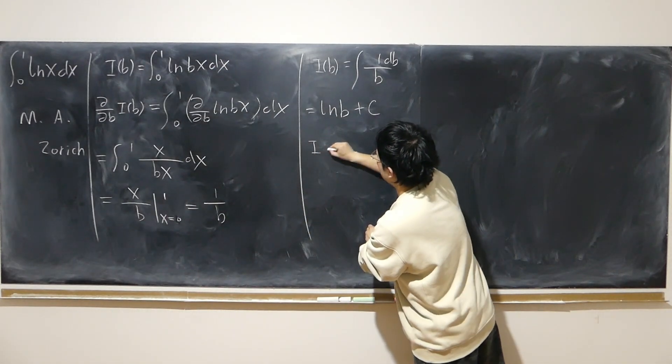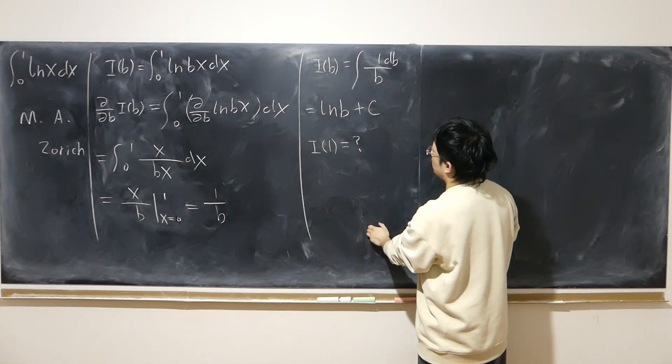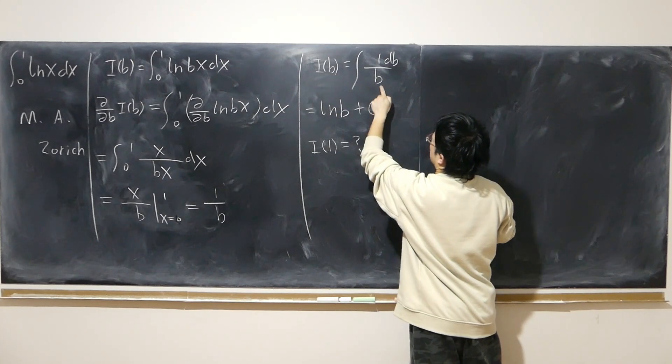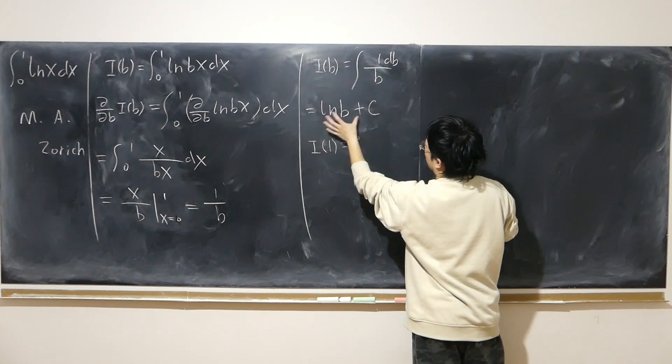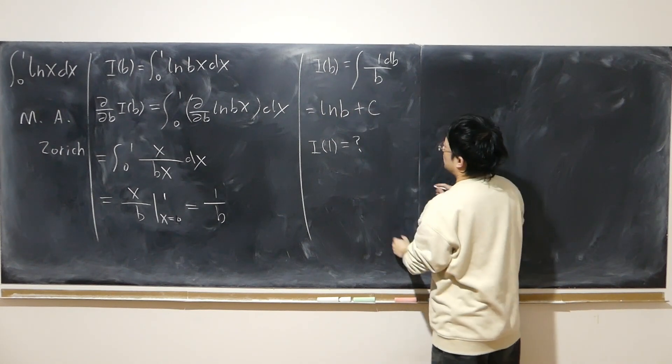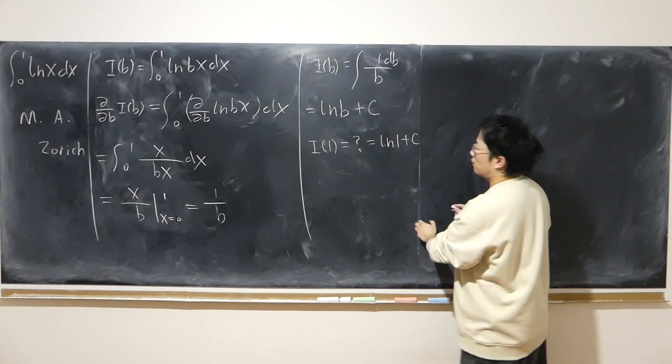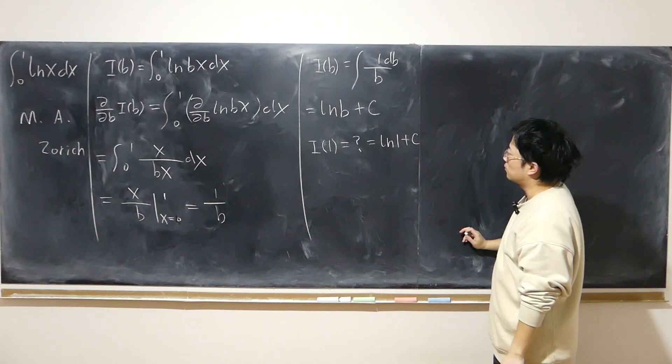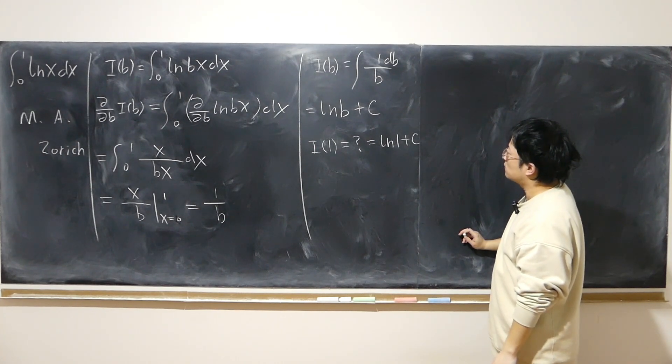So in other words, I(1), which means I(b) equal to 1, log 1 plus c. That is my goal result. What is that? But the question is, what is c?